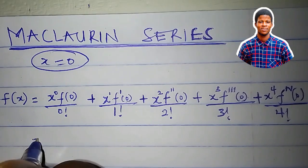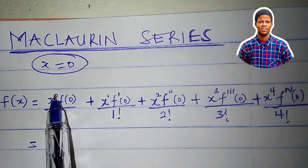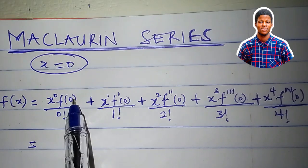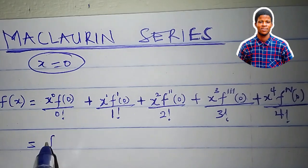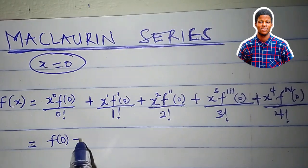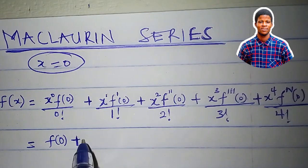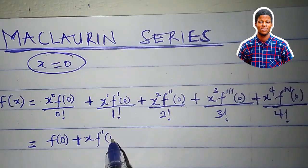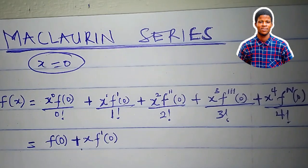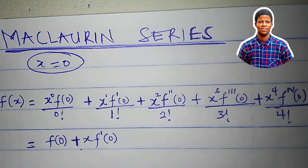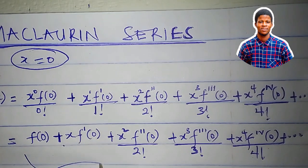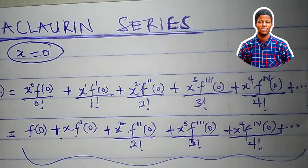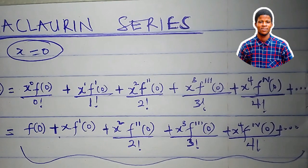Let's reduce this. x to the power of 0 is 1, and 1 times f of 0 is f of 0, and 0 factorial is 1. So everything here is actually equal to f of 0 plus x times f prime of 0 — since 1 factorial is 1, we may not need to write over 1 — and all other terms follow. We call this the Maclaurin series expansion of a function f of x centered about x equal to 0.